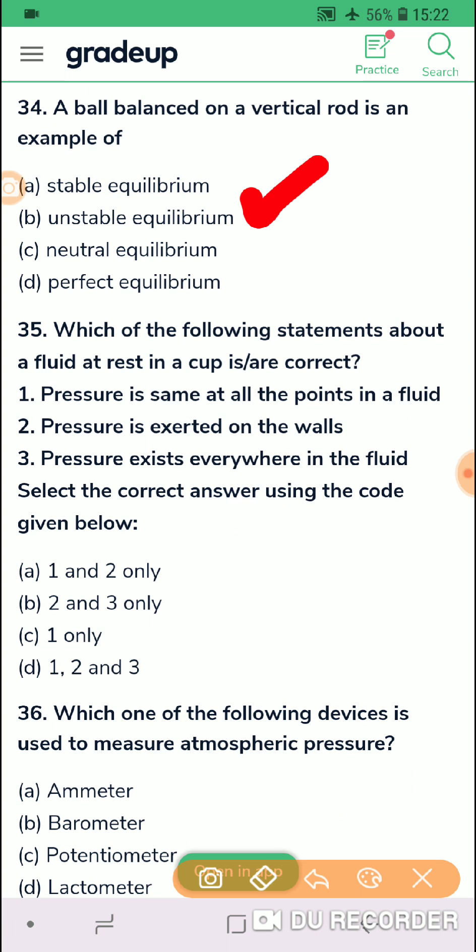Which of the following statement about a fluid at rest in a cup is correct? Let us check. Pressure is same at all the points in a fluid, absolutely wrong. Pressure is exerted on the wall, this is correct. Pressure exists everywhere in the fluid, that is also correct. So second and third option is correct, which option do you see B, option B. Second and third, they are correct in question 35, option B I am taking.